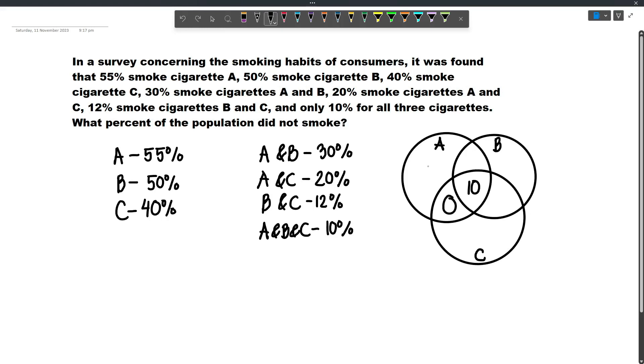And next, let's branch out dito. Now 30% of the population smoke cigarette A and B, and so the value here will be 30 minus 10. Because itong 10 already accounts for a portion of this one, and so 30 minus 10 will be 20.